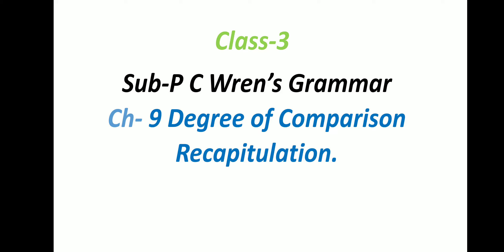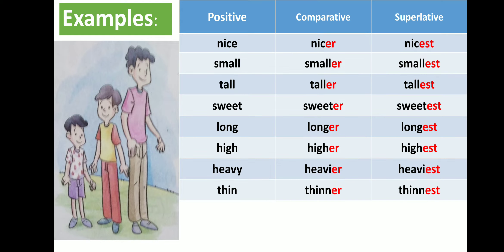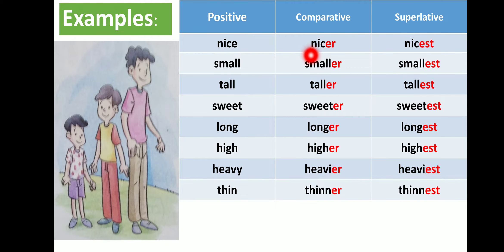Now let's proceed to Chapter 9 Degree of Comparison. See here, you have a picture showing a table. In the exam it may happen that a positive degree word is given and you have to convert it to comparative or superlative. Positive: nice, comparative: nicer (add -er), superlative: nicest (add -est).